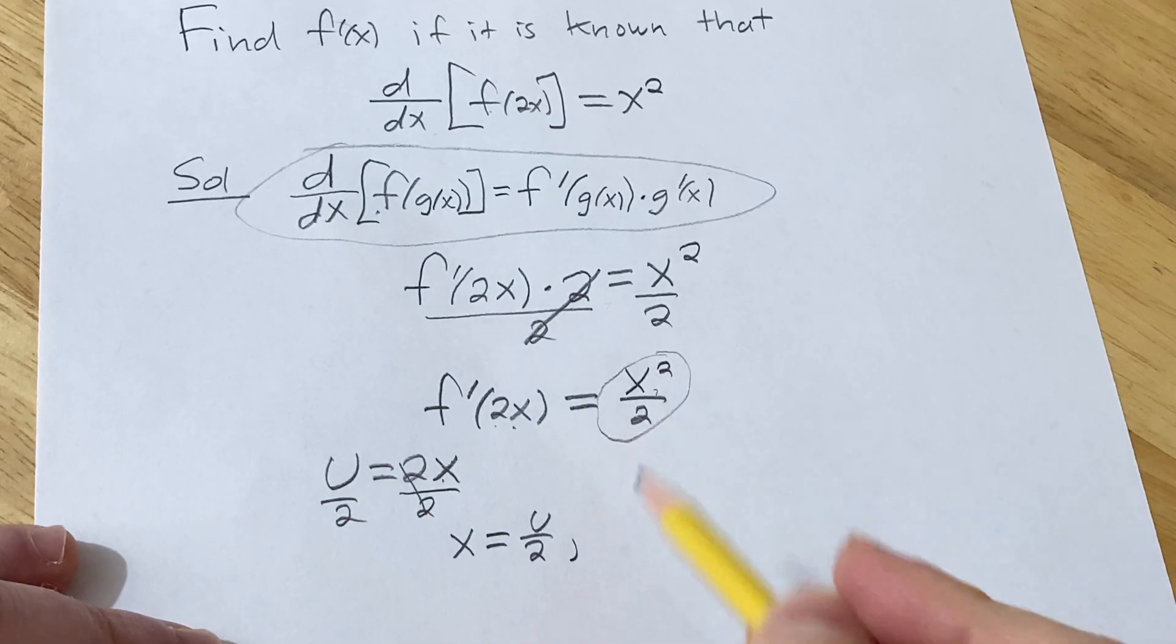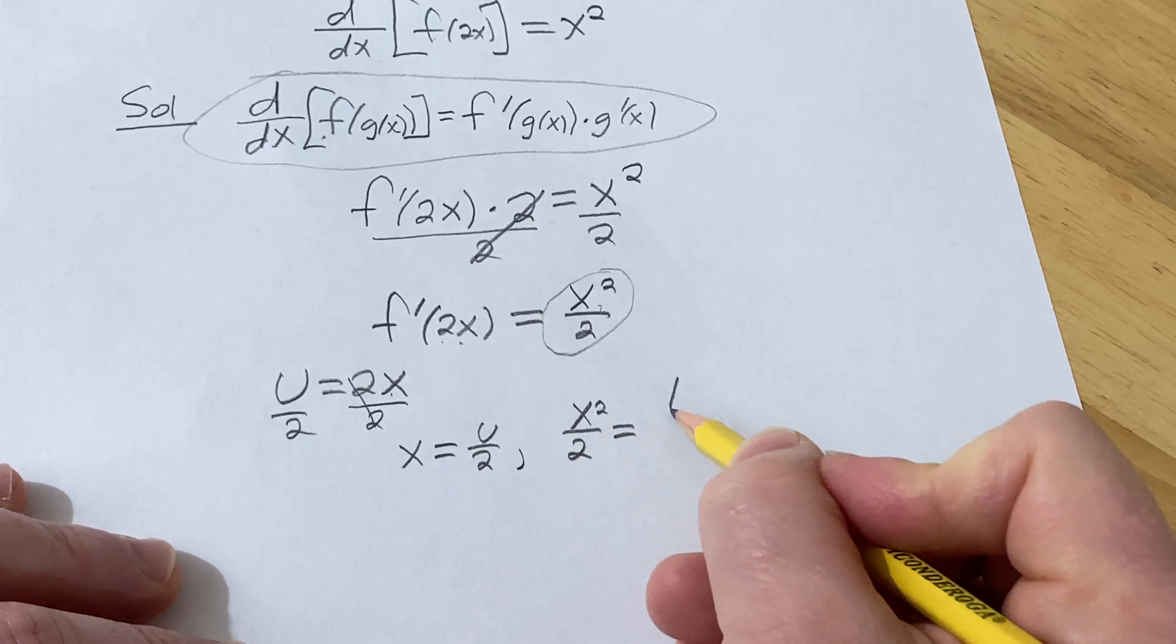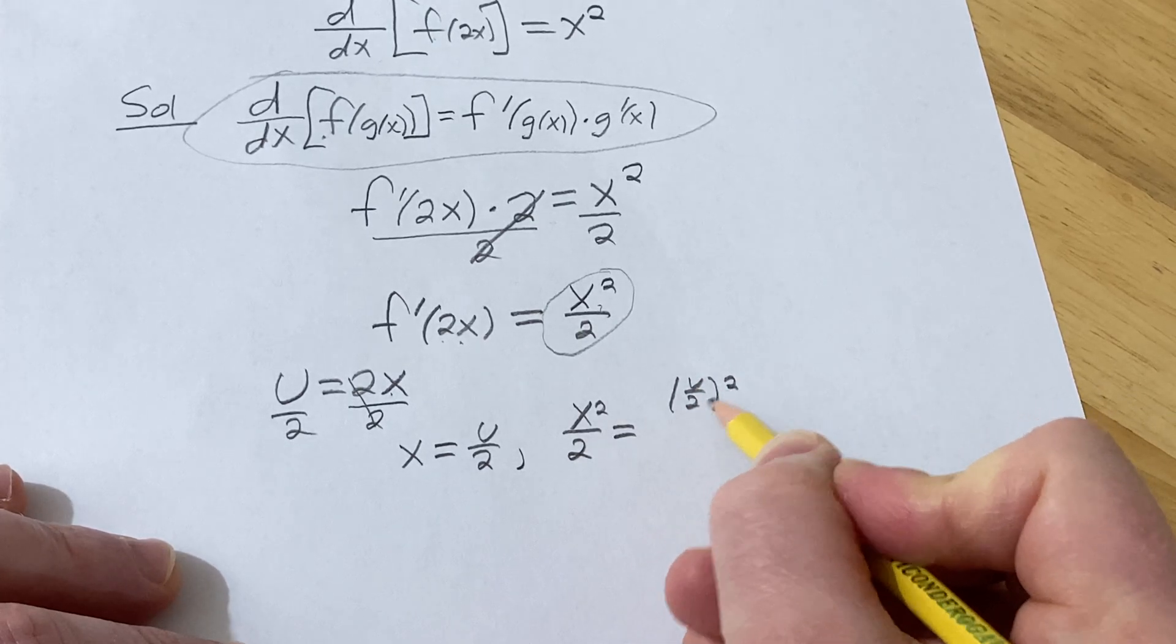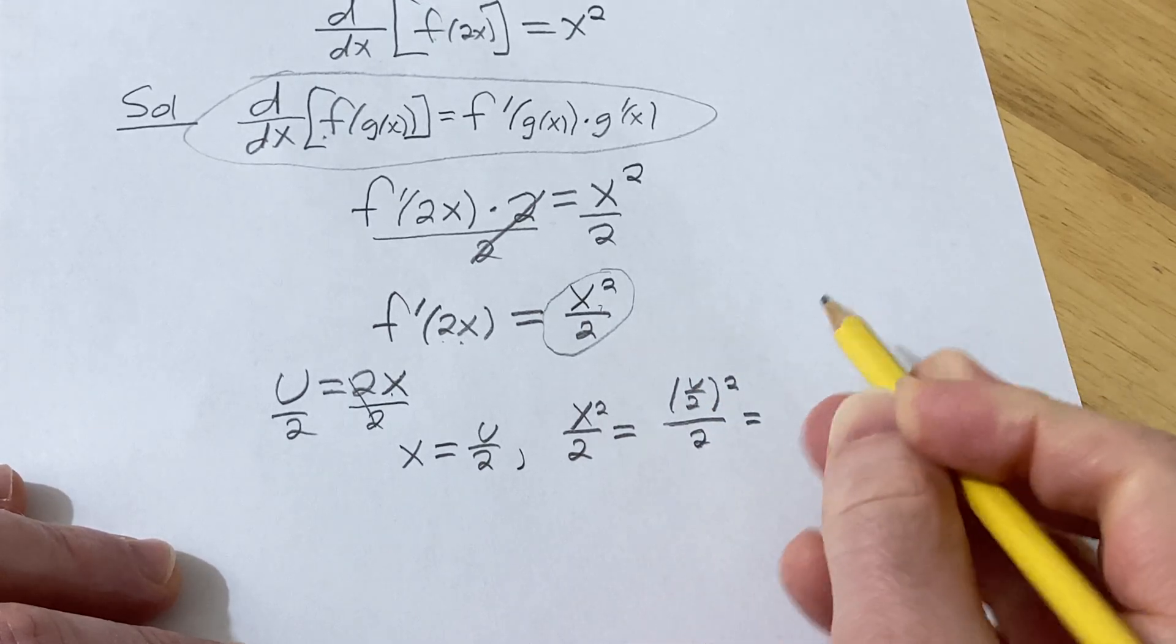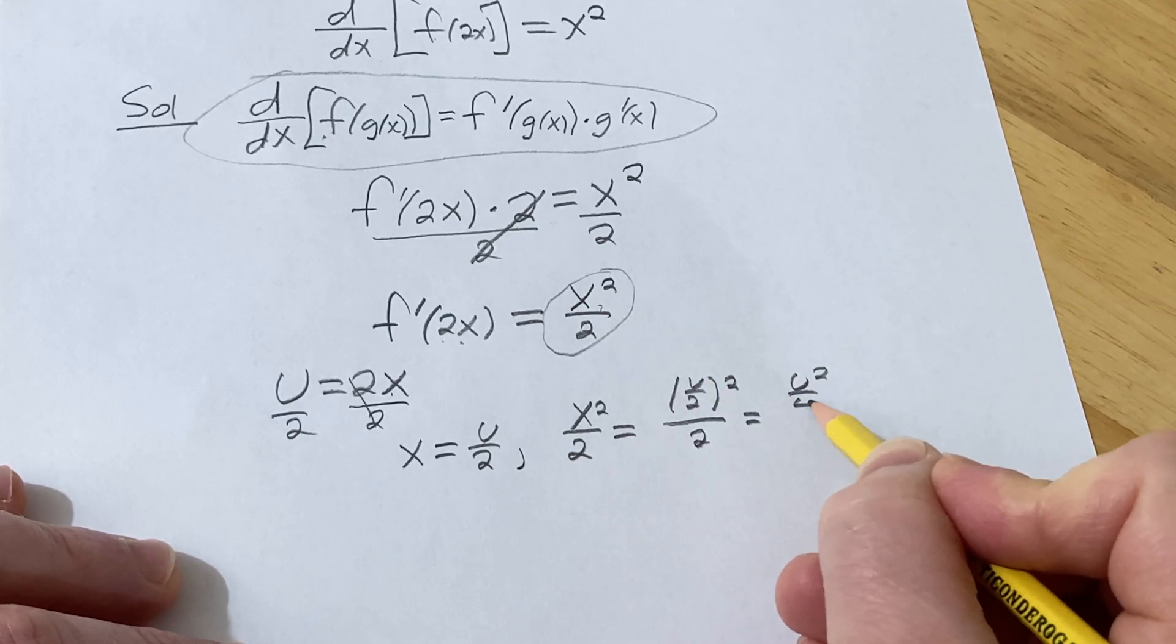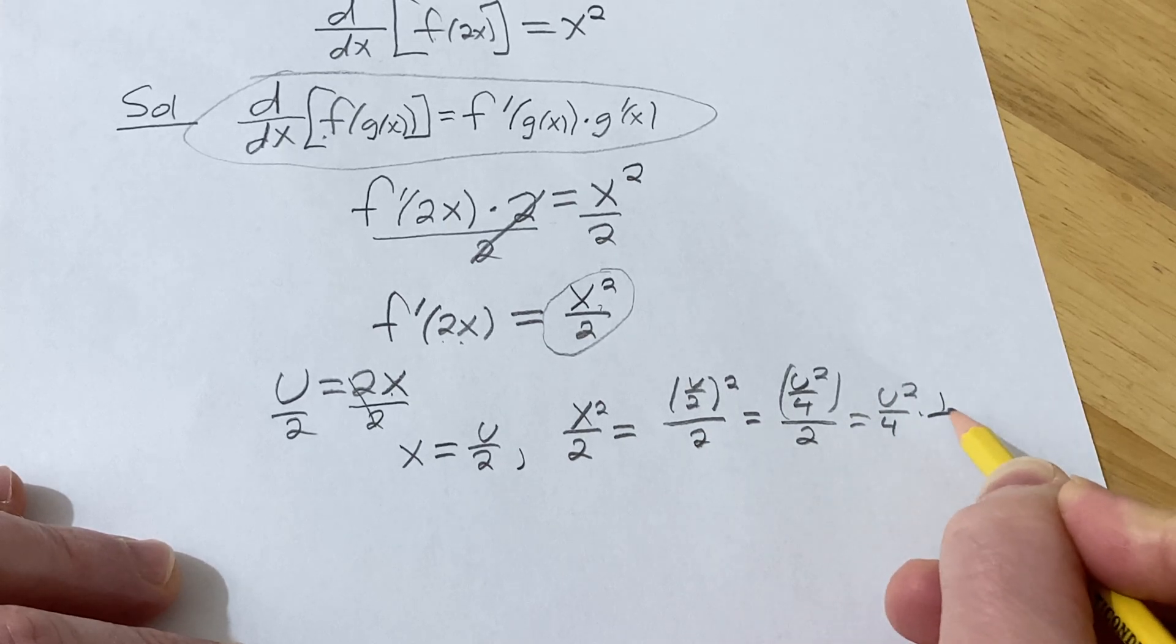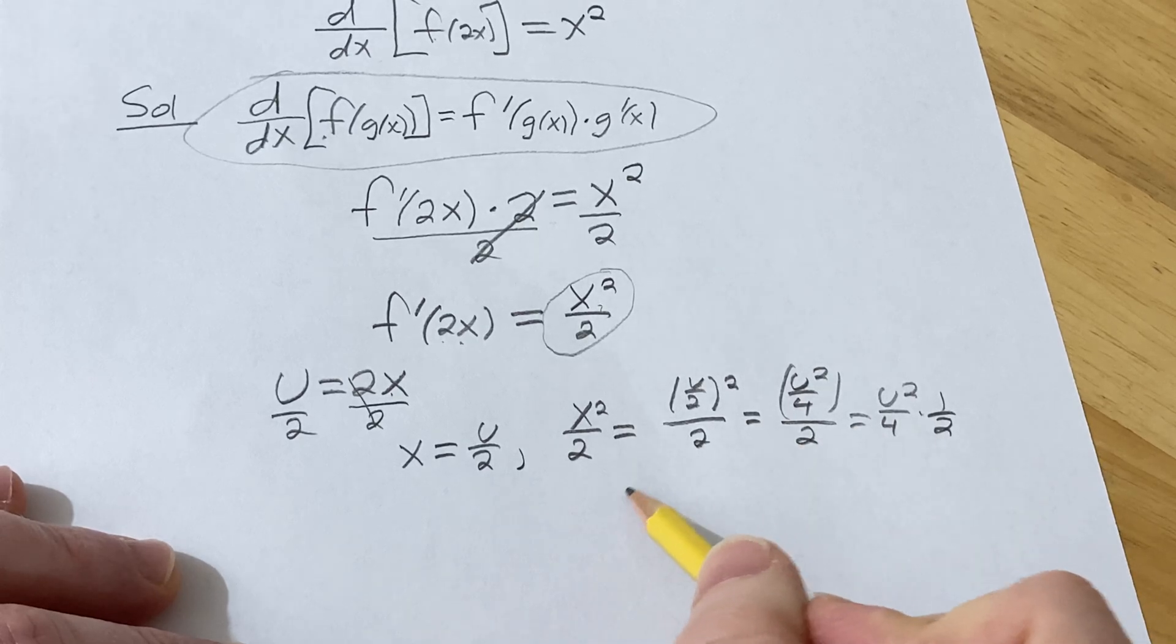And then so what does this become? Well x squared over 2, that's going to become, well x is u over 2, so it's u over 2 squared over 2. What's this going to be? Well u squared in the numerator, squared the denominator over 2. Division by 2 is really multiplication by the reciprocal. And so this is actually u squared over 8.